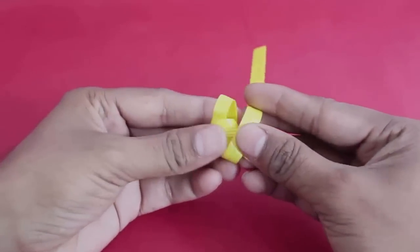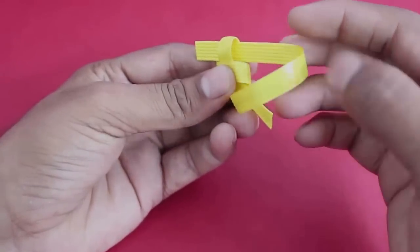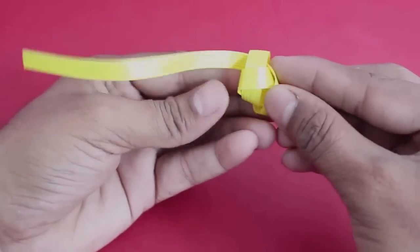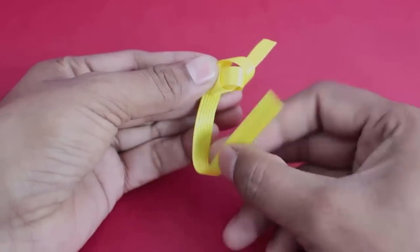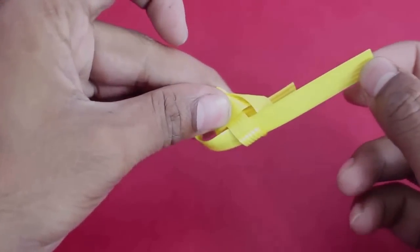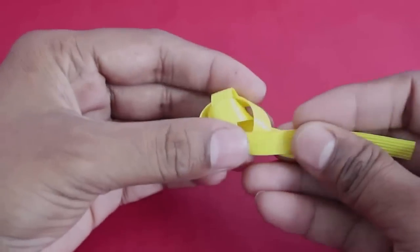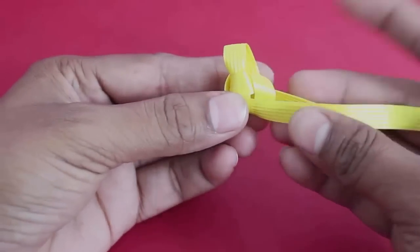Take the open end and weave it through the neck, through the loop at the top. Then once again take this end and weave it as shown. This will make a very nice knot.